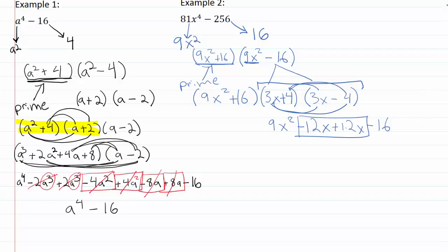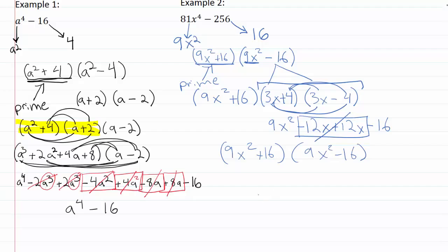The plus twelve x and minus twelve x are like terms and they completely cancel out, leaving nine x squared minus sixteen. Multiplied by nine x squared plus sixteen, which is exactly what we'd expect. We can keep FOILing to verify all the way back to the original expression.